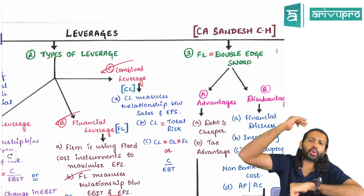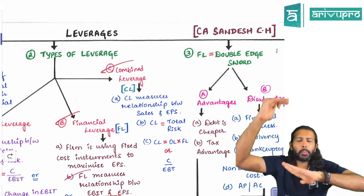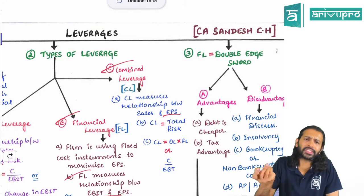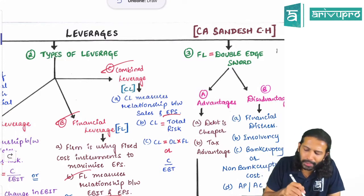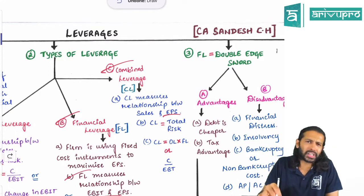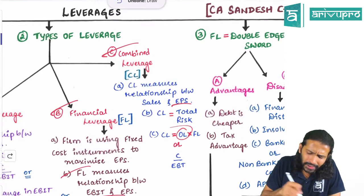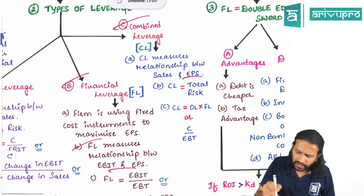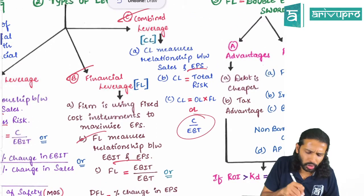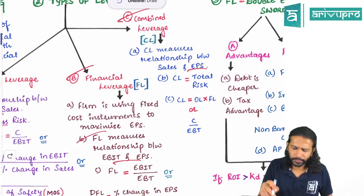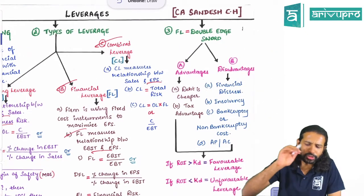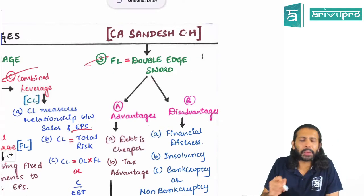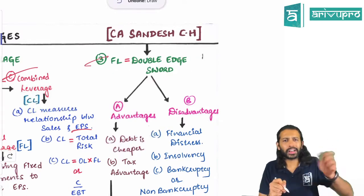Combined leverage is the total risk. It measures the relationship between sales (the topmost figure) and EPS (the bottom-most figure). Combined leverage is given by operating leverage multiplied by financial leverage. Combining both formulas, it can also be expressed as contribution divided by EBT.